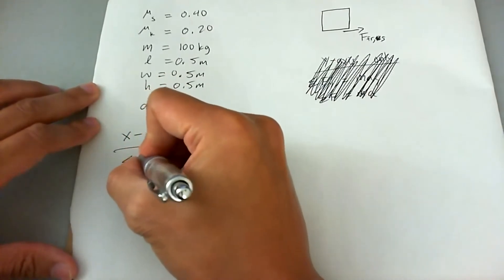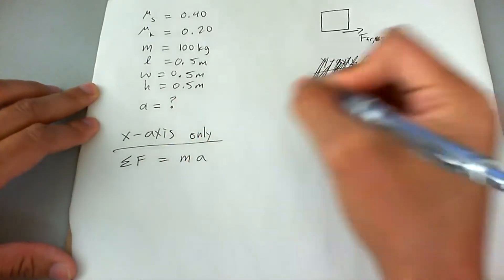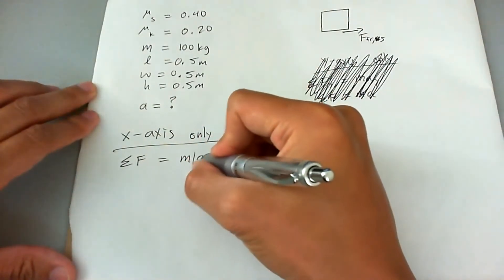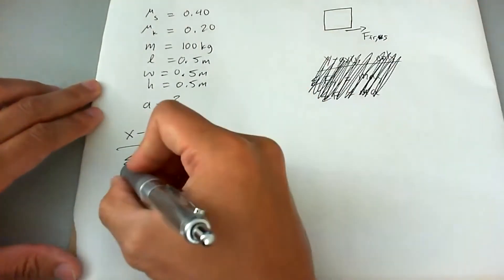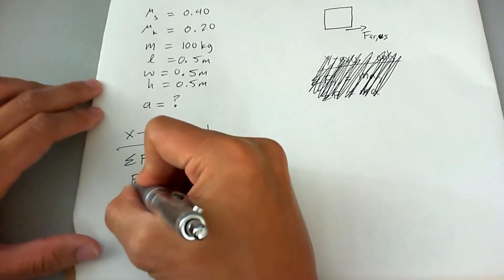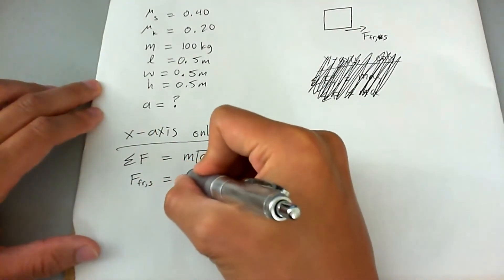The sum of all forces is going to equal Ma. A is what we're trying to find acting on the box. The only force acting on it actually ends up being the force of friction static, and that's going to equal Ma.